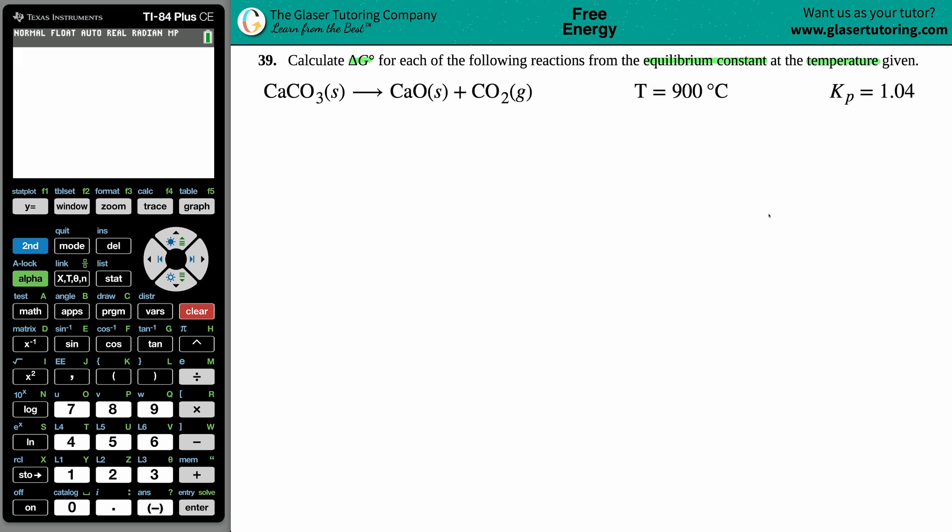When they give you an equilibrium constant, a K value, and you're solving for your Gibbs free energy delta G, there's only one formula. If you're solving for delta G, it's easiest to use this formula right here: delta G equals negative RT ln, which is the natural log of your equilibrium constant, your K value.